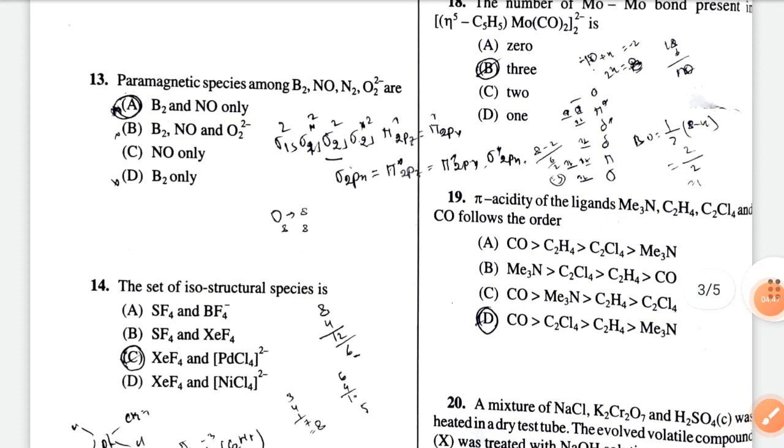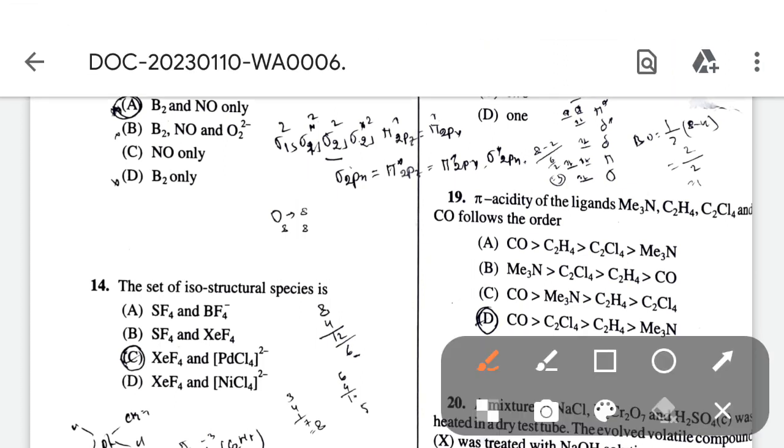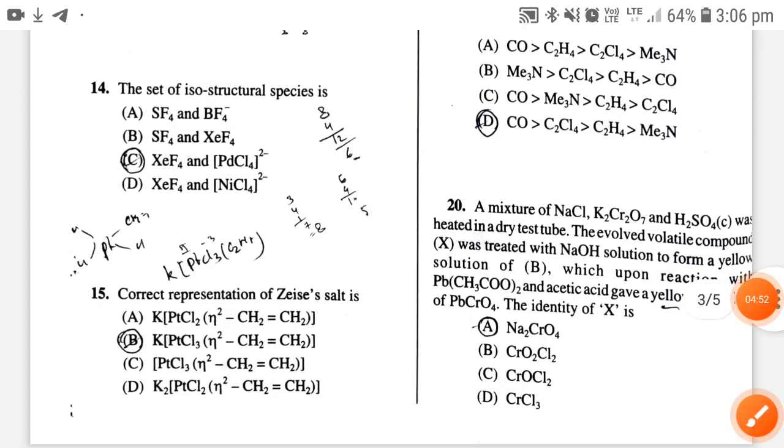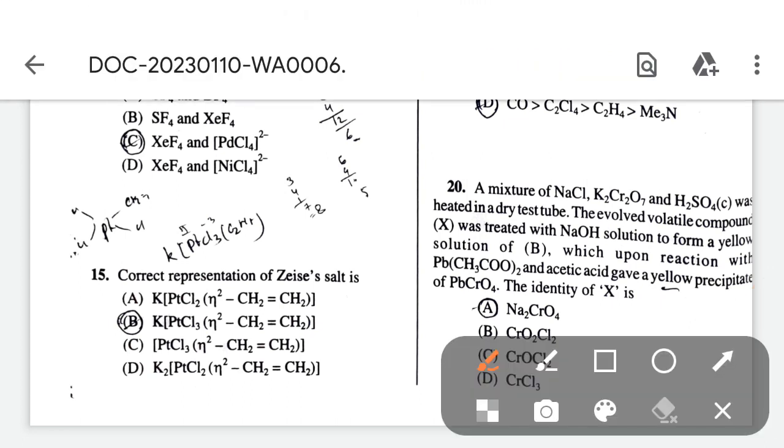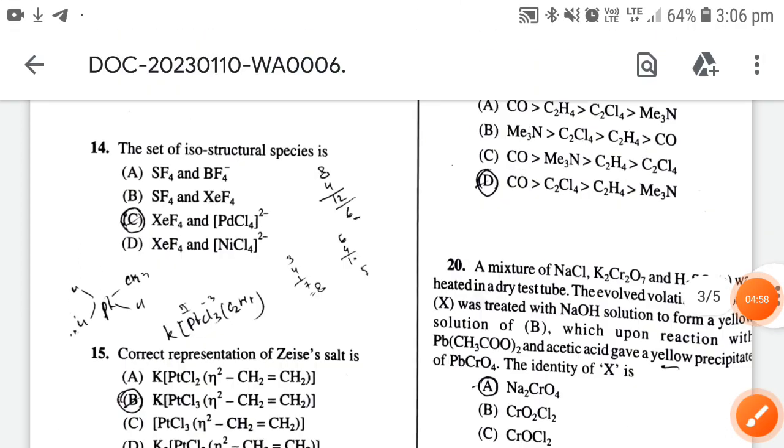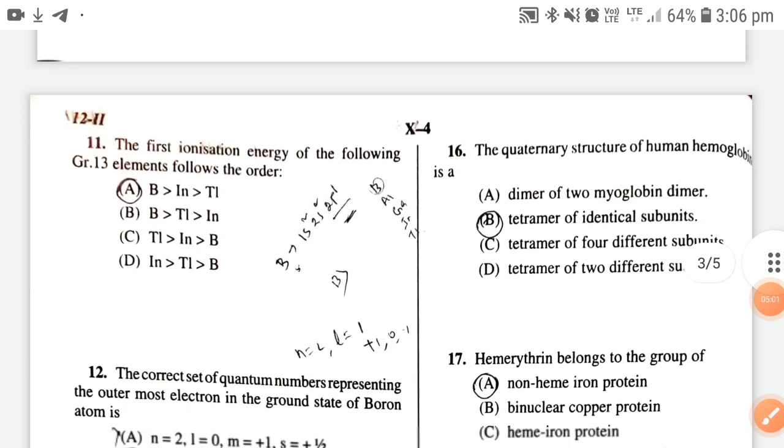Question 14: the set of isostructural species - the correct option is option C. Next, correct representation of XY salt - the correct option is option B.